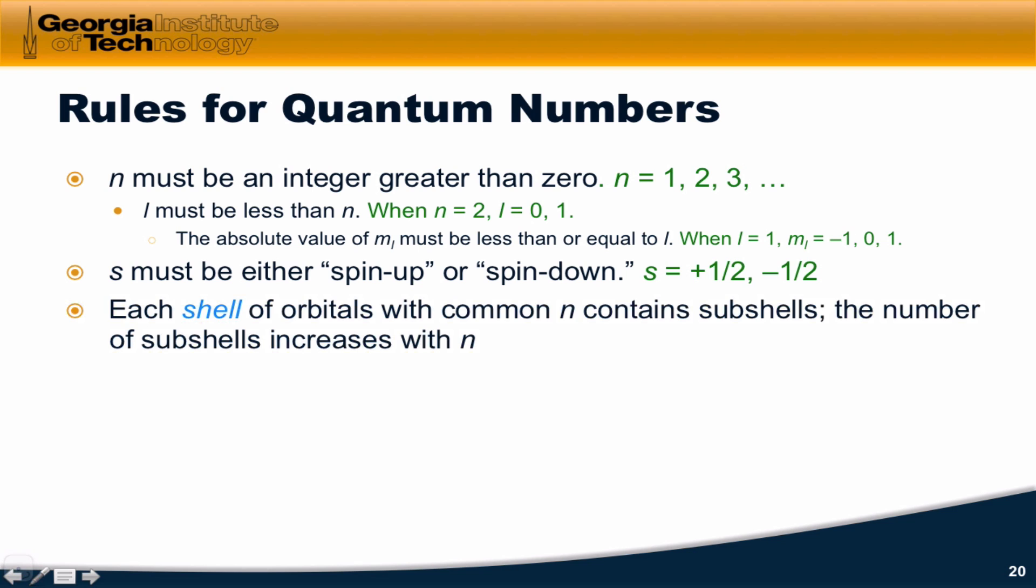Pretty straightforward. Now, what you might have noticed about this quantum number model is that it almost, in a way, defines shells that can contain electrons. Each shell of orbitals with a common principal quantum number contains multiple, in many cases, subshells. And the number of subshells increases with n, right?